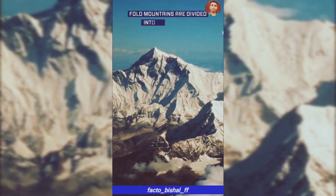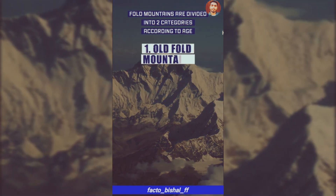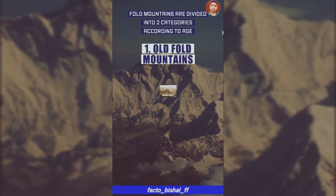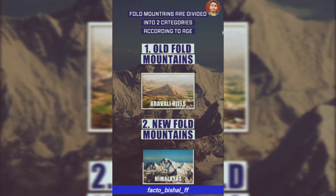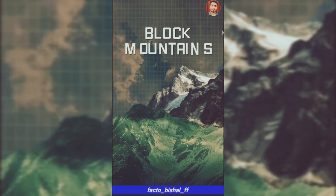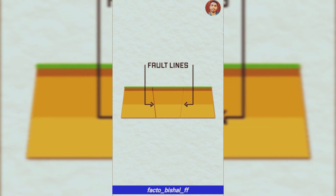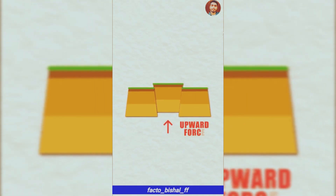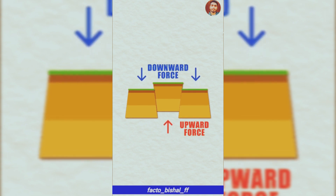Fold Mountains are divided into two categories: Old Fold Mountains, for example the Aravali Hills, and New Fold Mountains, for example the Himalayas. The other type of mountain is Block Mountains. When tectonic forces act on the tectonic plates, there are two results — the block will rise upward, or because of downward force, the side blocks will drop below.